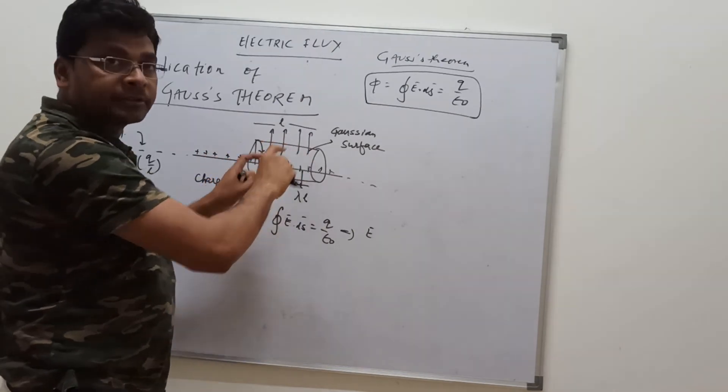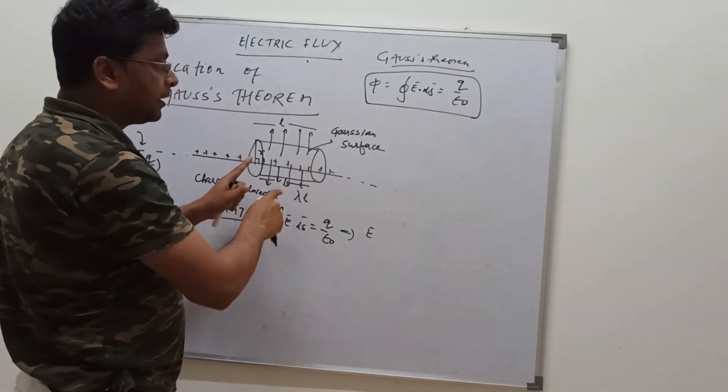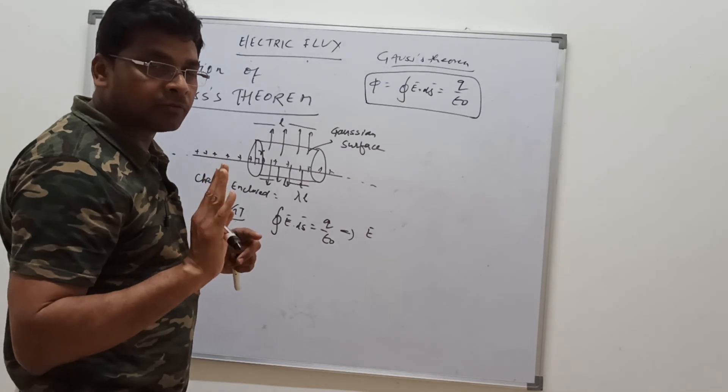Electric field lines are passing like this, so we have to take the curved surface area of the cylinder and not the cross section area. We have to avoid it, there is no electric flux through that.